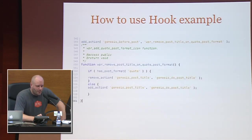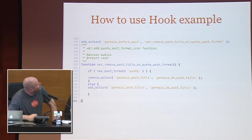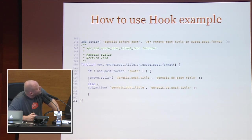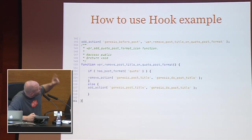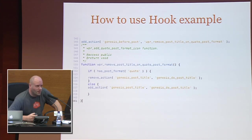Here's an example of what a function would actually look like. The function removes the post title on the specific quote post format. If the post format is 'quote', remove the action 'genesis_post_title' and add the location. Else, it adds it back — because otherwise it's going to be gone on all of them. At the top you see the 'add_action': the function I just created needs to be added to 'genesis_before_post', because I want that specific code executed before every single post.